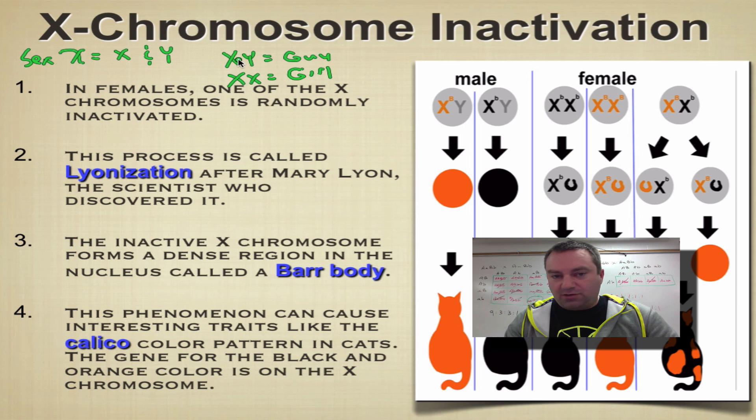Another thing I want you to pay attention to is you only need one X chromosome to survive, because the perfect example are the guys - they only get one. They only need one. So essentially every female kind of has an extra X chromosome.